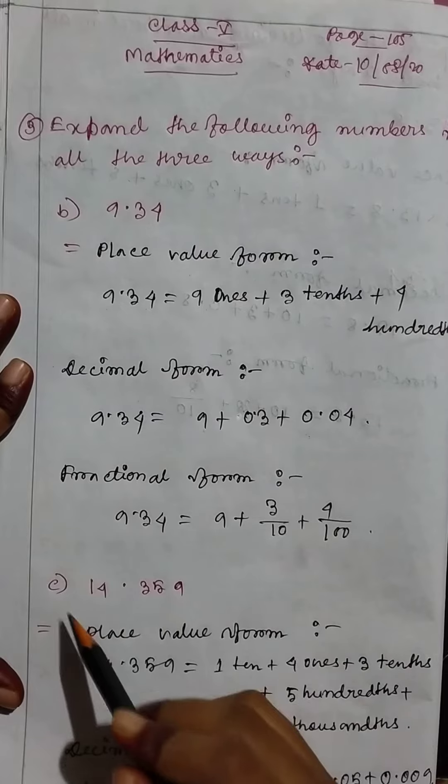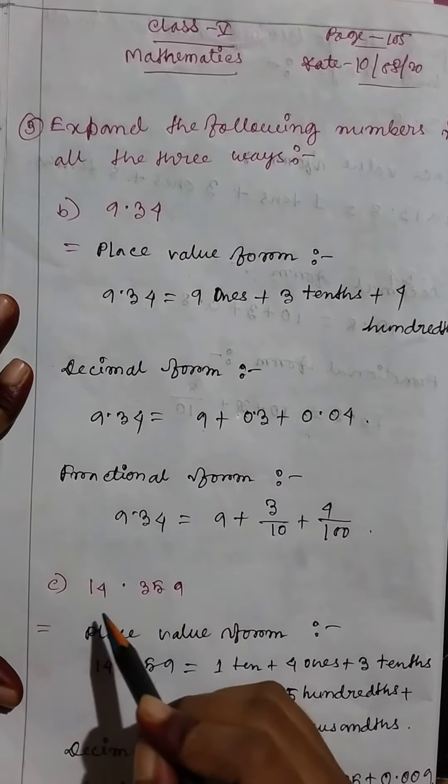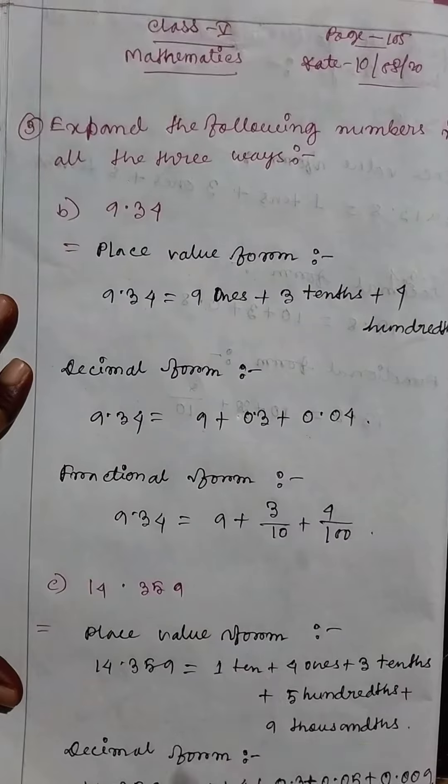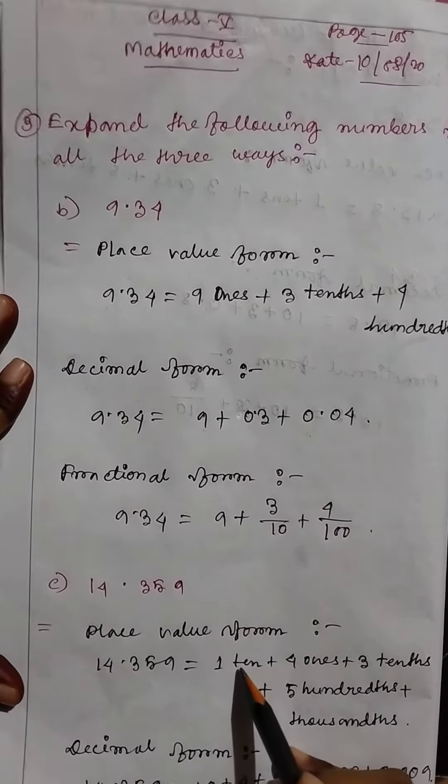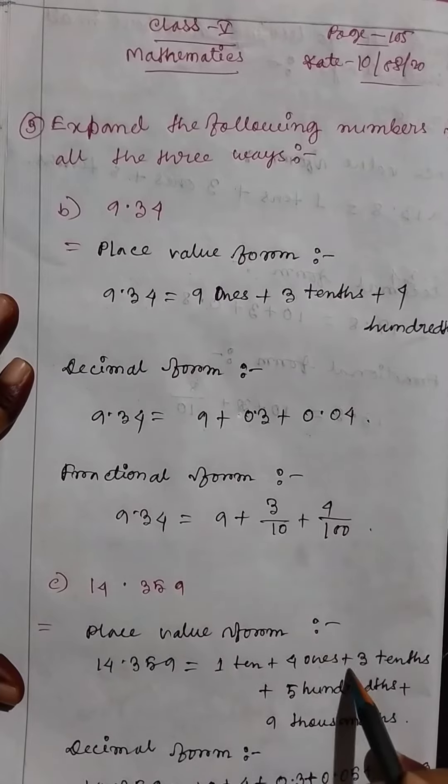Then part c: 14.359. Place value form equals 14.359 equals 1 ten plus 4 ones plus 3 tenths plus 5 hundredths plus 9 thousandths.